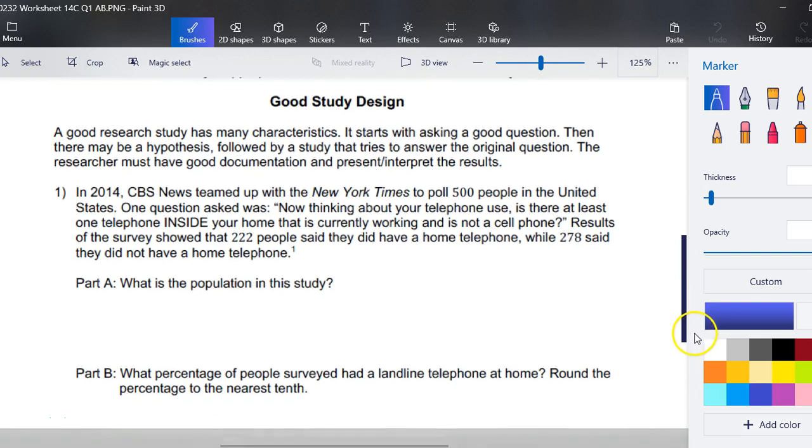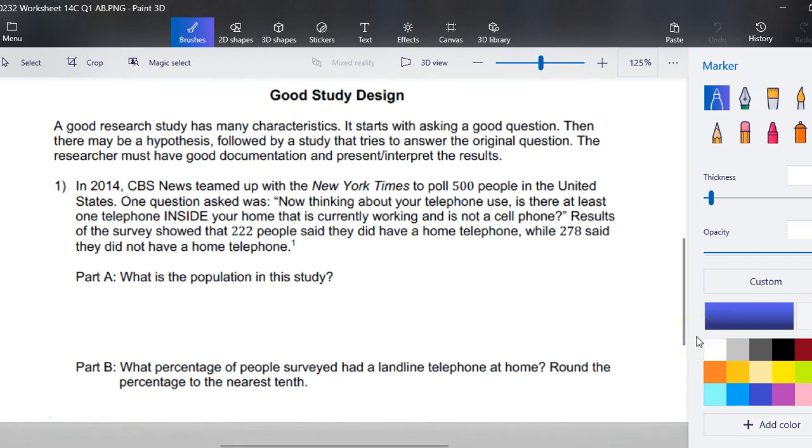That's a lot. So let's start with a good study design. A good research study has many characteristics, but we know that it starts with asking a really good question. Then there may be a hypothesis, followed by a study that tries to answer the original question, and the researcher must have good documentation and present and interpret the results.